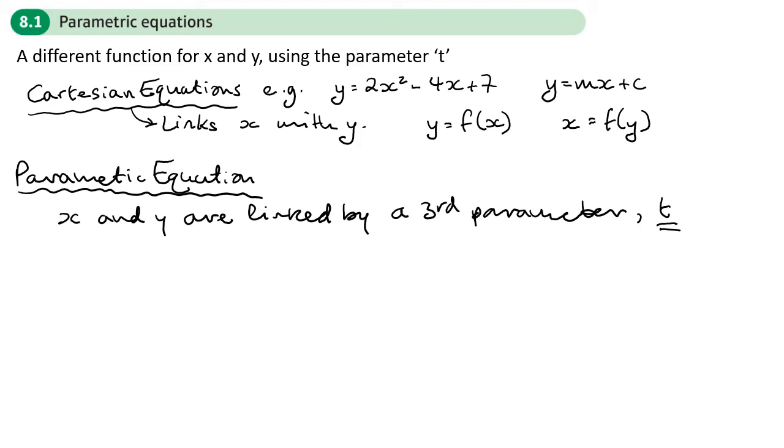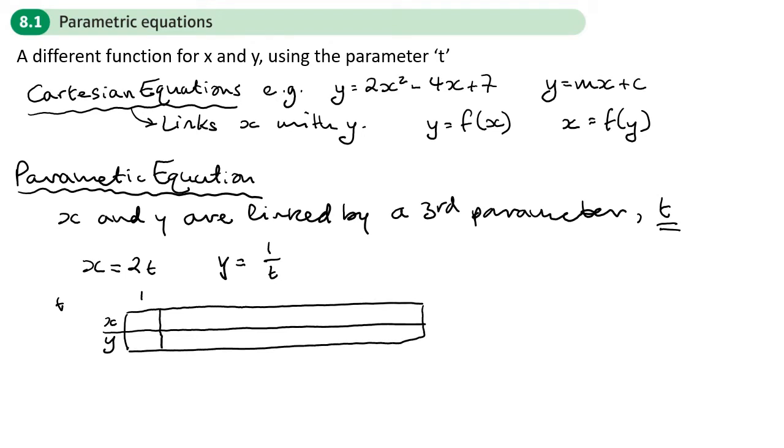Here's an example: x equals 2t, y equals 1 over t. And if I wanted to generate x and y coordinates, maybe to plot this, I would substitute in different values of t to get my x and y coordinates. So for example, if t was 1, then x would be 2 and y would be 1. If t were 2, then x would be 4 and y would be 1 over 2. If t were 3, it would be 6 and then 1 over 3, and so on.